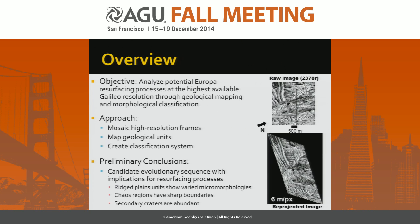The three observations are: that the ridged plains units show varied micromorphologies at this resolution; that chaos regions have sharp boundaries in the high resolution compared to the gradual boundaries seen in regional resolution; and that secondary craters are abundant at this resolution.